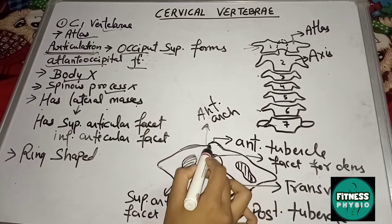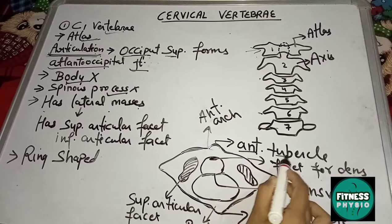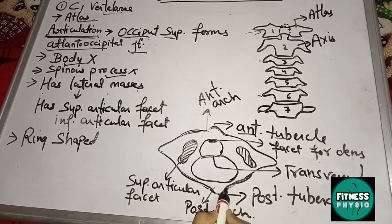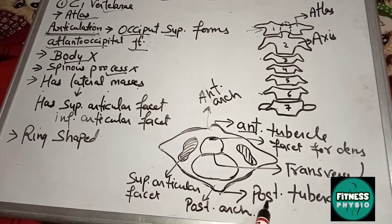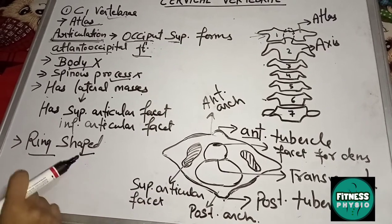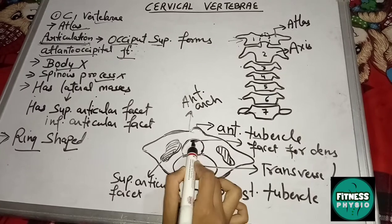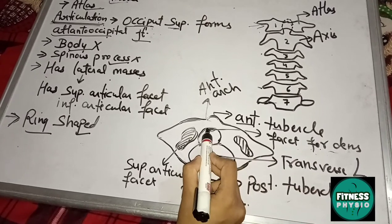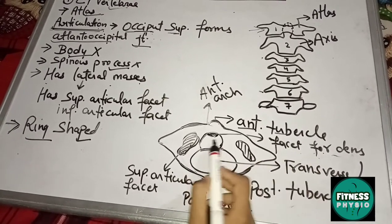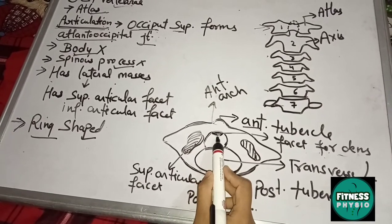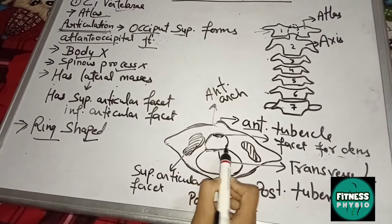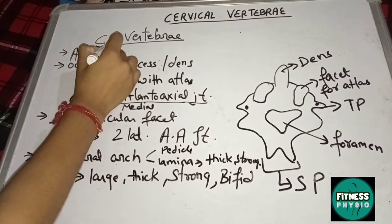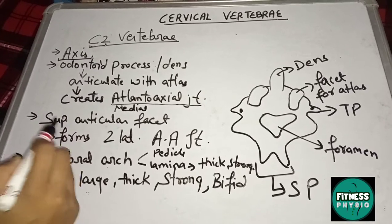The anterior arch is defined by a tubercle anteriorly, known as the anterior tubercle. It also has a posterior tubercle. C1 has a ring-shaped structure, and you can see here a facet for the dens. The dens is present in C2 and articulates anteriorly with this facet in C1, while posteriorly the dens articulates with the transverse ligament.